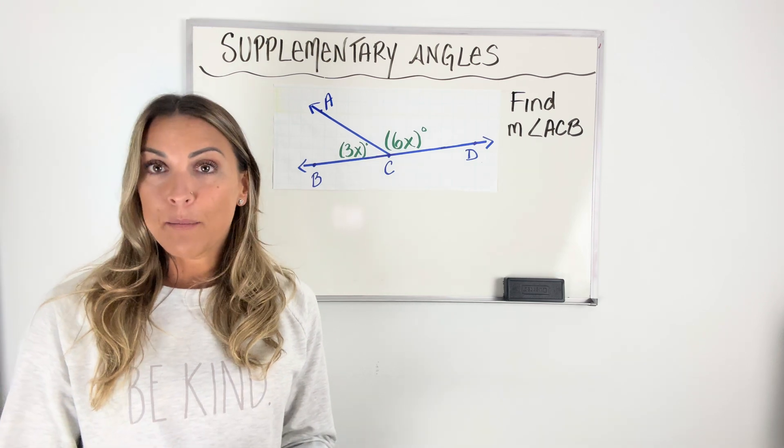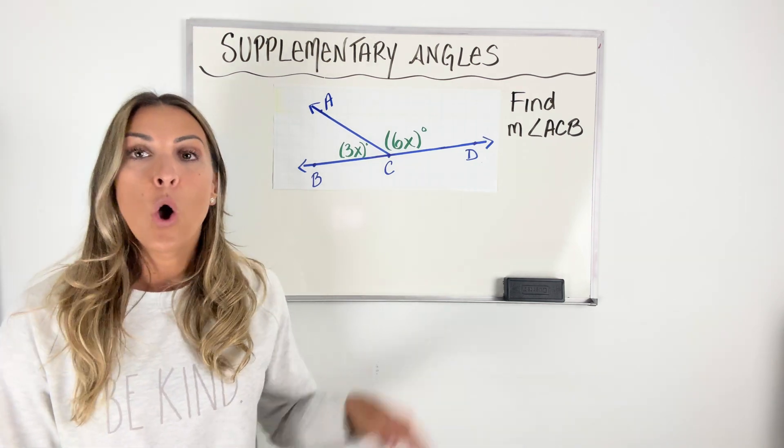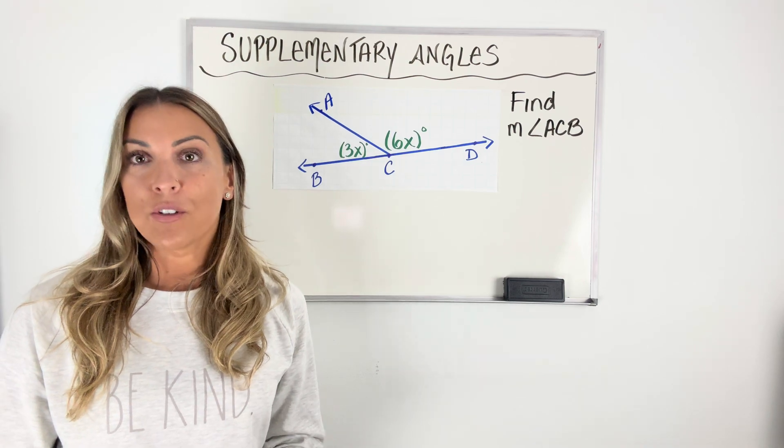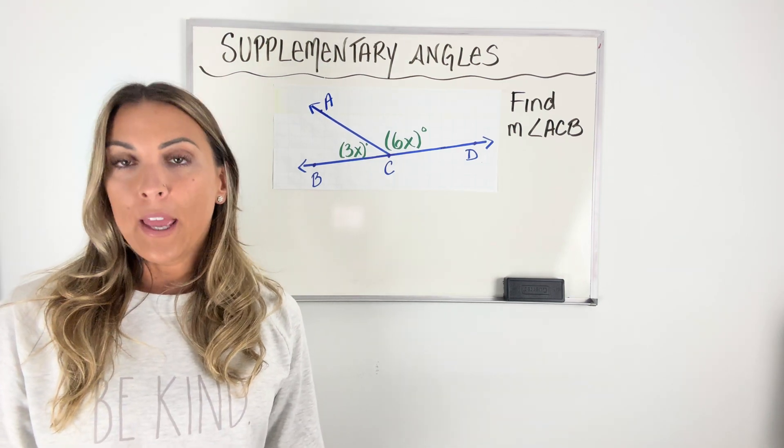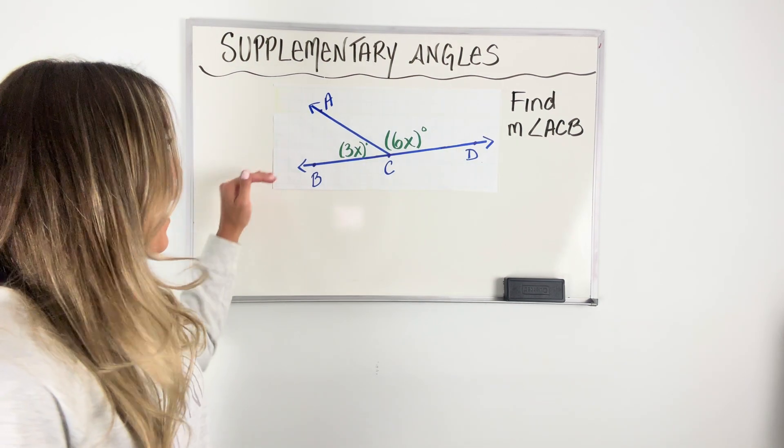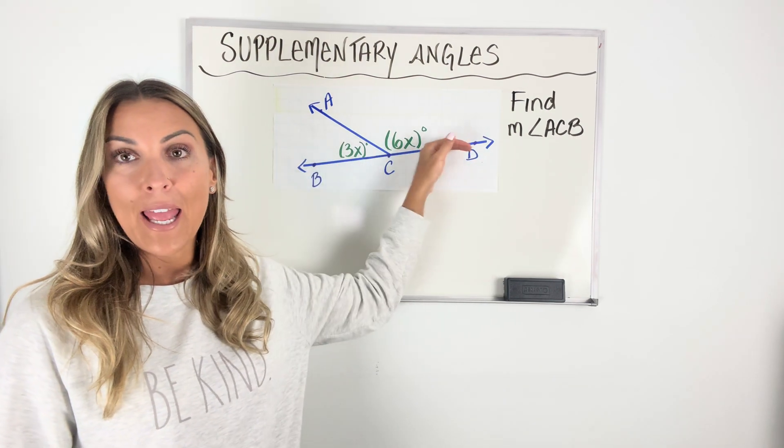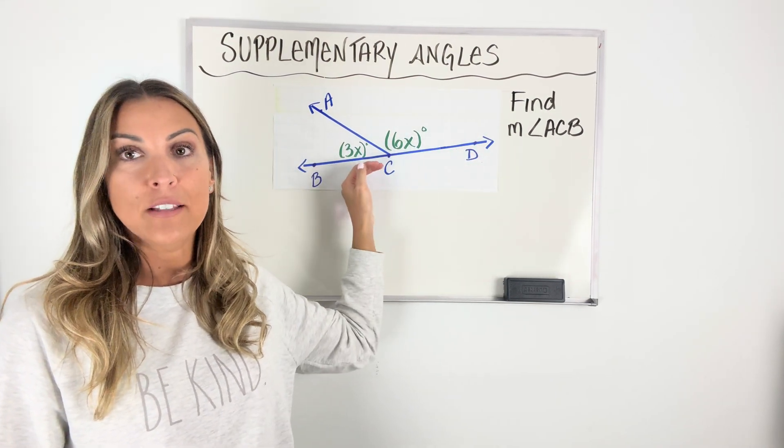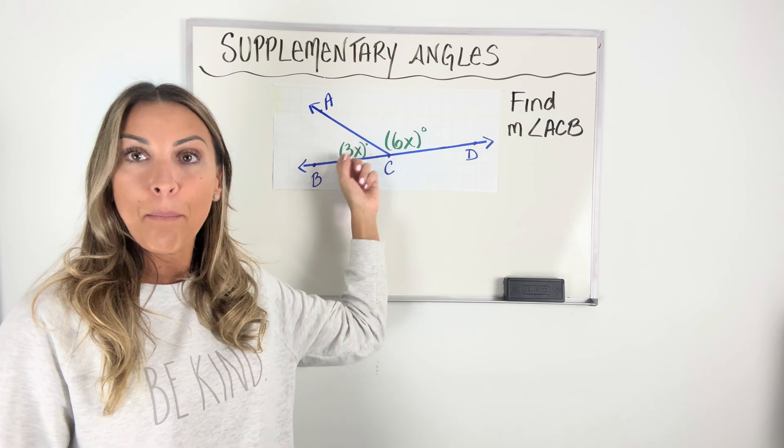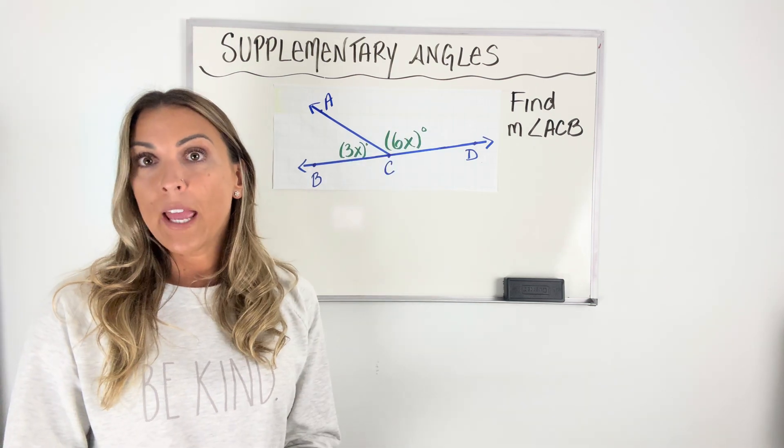Now, a lot of times problems that deal with supplementary angles won't use that word. You're just going to have to know that they're supplementary. So how will you know? One way is if you see a straight line. Any straight line, any straight angle is 180 degrees. So the angles that make up that line, when you put them together, those are supplementary angles.